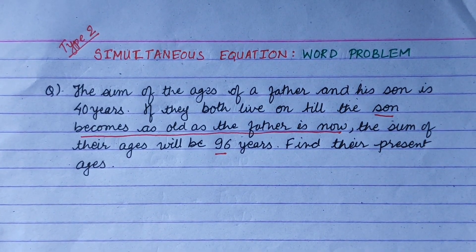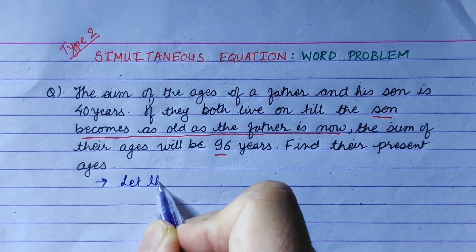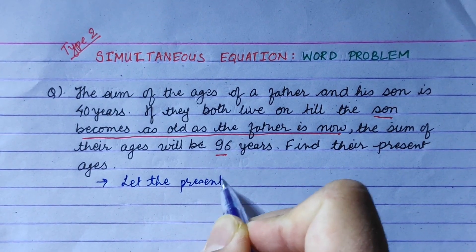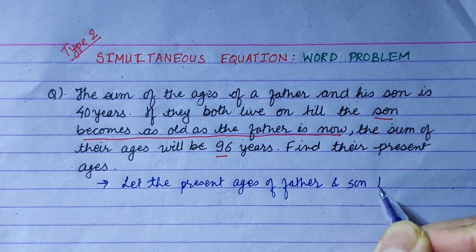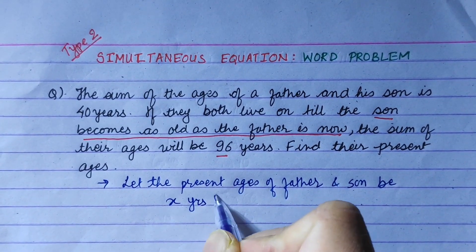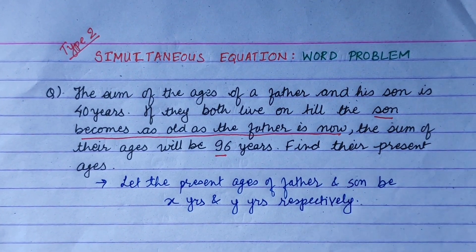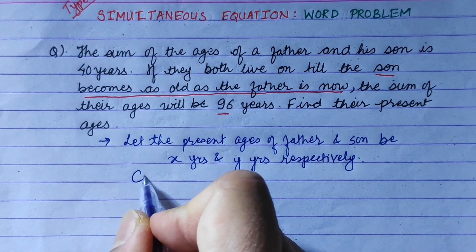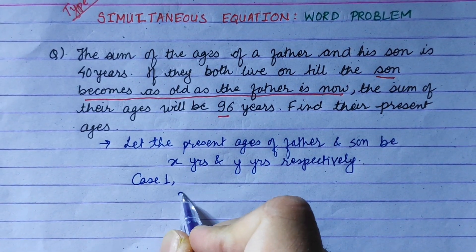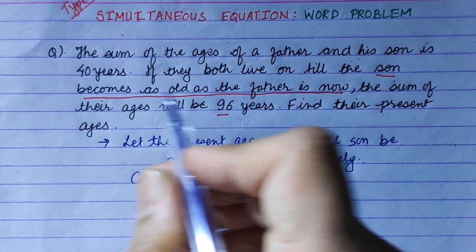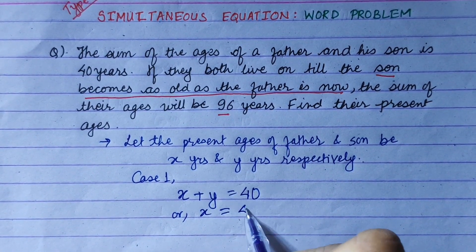Abha eis laya kasari garni? Sabhan na paela ta buaa ra chora ko present age suppose garnas. Let the present ages of father and son be x years and y years respectively. Poilu condition — Case 1: The sum of ages of father and son is 40 years. So x plus y is equal to 40, which gives x is equal to 40 minus y.